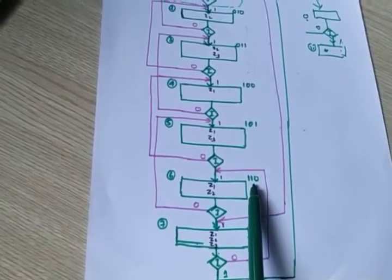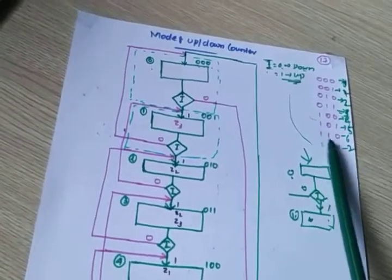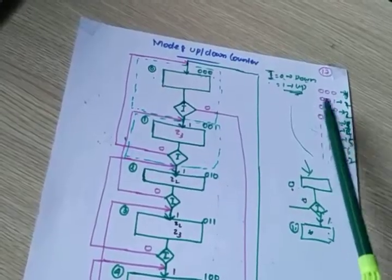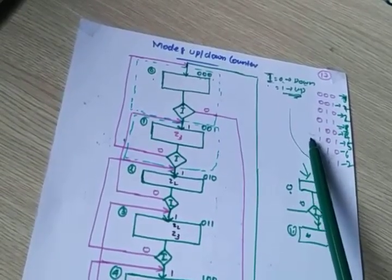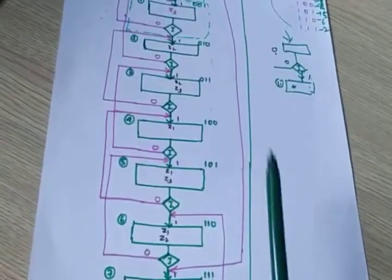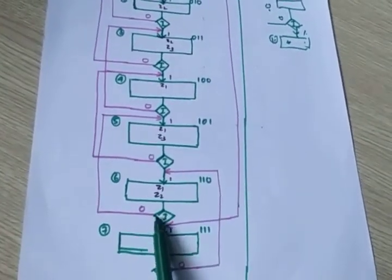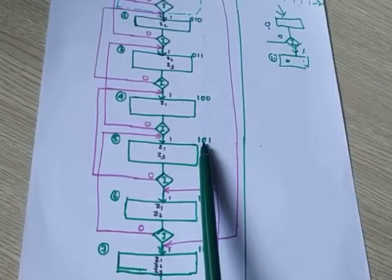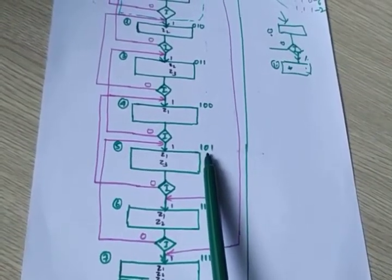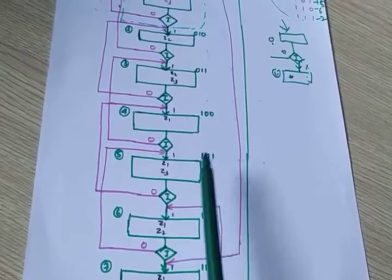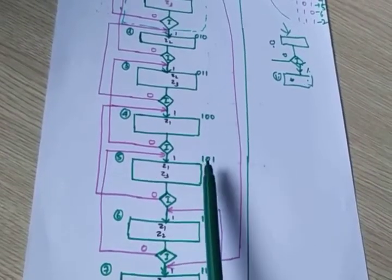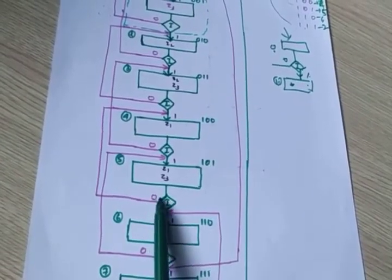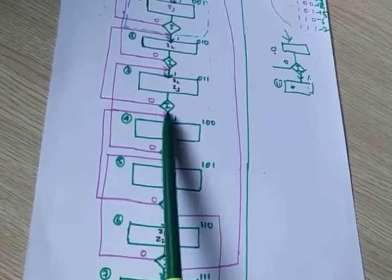Now at 110, if i is 0 — that means down count — it should go to 101. At 110, decision 0 goes to 101. If at 101 and i is 0, it should go down. Next down is 100. From 101, if 0 comes, it goes to down count — next is 100.